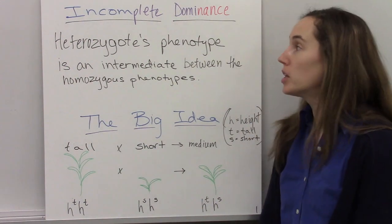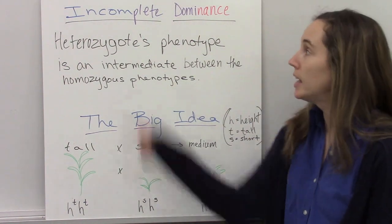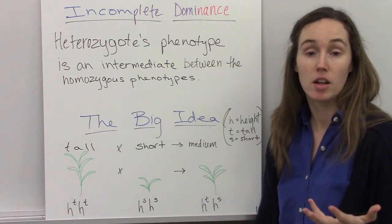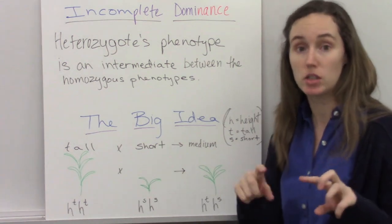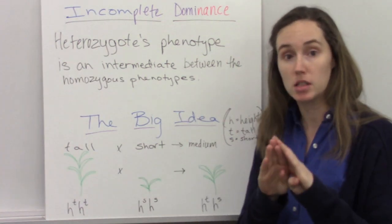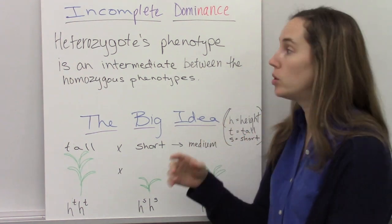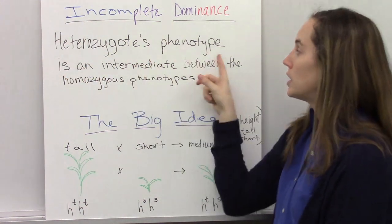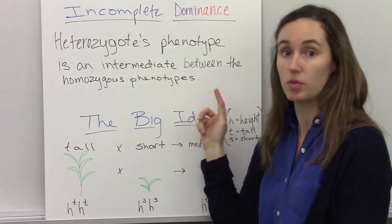In this video, we're going to talk about the mode of inheritance in genetics called incomplete dominance. This is different than the basic dominant-recessive where you have two alleles and when you combine them the dominant one shows. This is different because organisms that are heterozygous, their phenotype is an intermediate between the homozygous phenotypes.